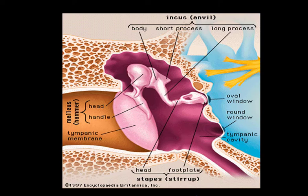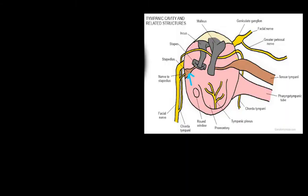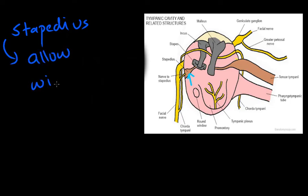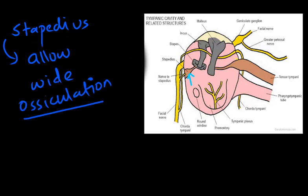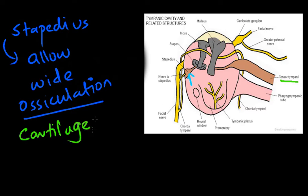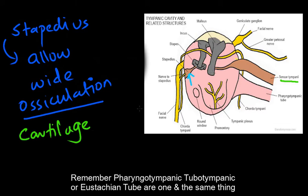The two most important muscles responsible for adjusting how much the stapes connects with the oval window are the stapedius muscle and the tensor tympani muscle. The stapedius allows wide oscillation of stapes on the oval window. The tensor tympani attaches to the incus and arises from the cartilaginous part of the pharyngotympanic tube — the Eustachian tube. Both muscles have different nerve supplies.